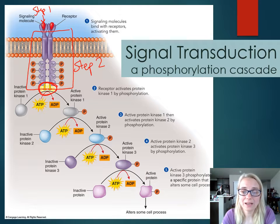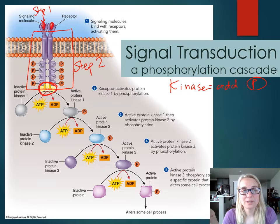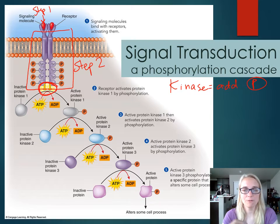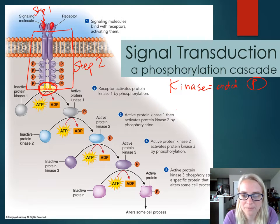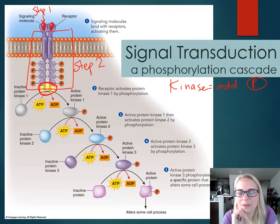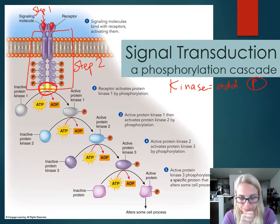Kinases are enzymes that add phosphate groups, and phosphate groups tend to turn things on — it's like an on-switch. When you add a phosphate group, it excites that particular molecule. When you take a phosphate group away, it breaks that apart. There's another enzyme that can remove phosphate groups — dephosphorylate — which will deactivate whatever the phosphate group was hooked onto. So let's take a look at this cascade. It's almost like the domino effect.